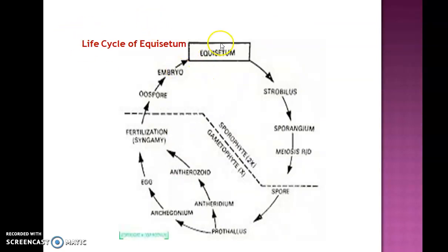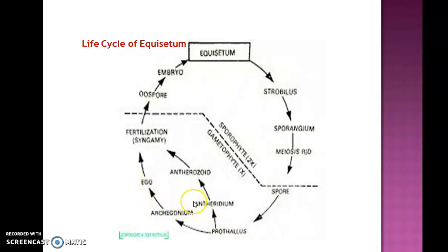In schematic representation: the life cycle of Equisetum starts with the zygote, embryo formation, sporophyte plant, strobilus, sporangium, meiotic division producing haploid spores — marking the beginning of gametophytic generation. Spores form the prothallus, which is monoecious with antheridium and archegonium. Inside the archegonium is the egg; inside the antheridium are antherozoids. Fertilization forms the zygote, marking the next sporophytic generation. There is thus an alternation of sporophytic and gametophytic generations in the life cycle of Equisetum.